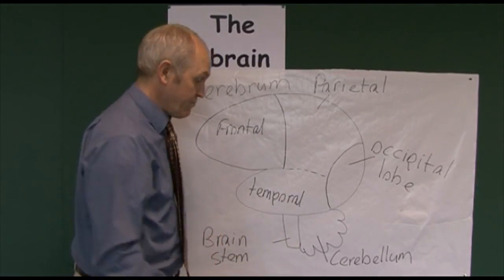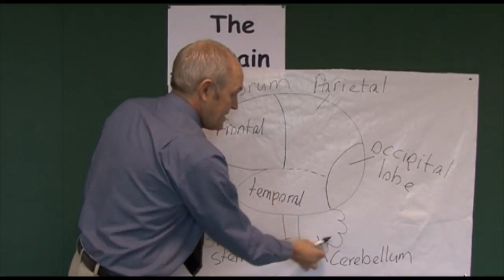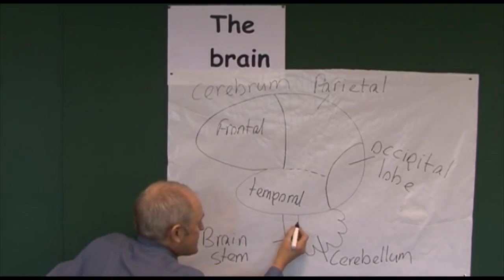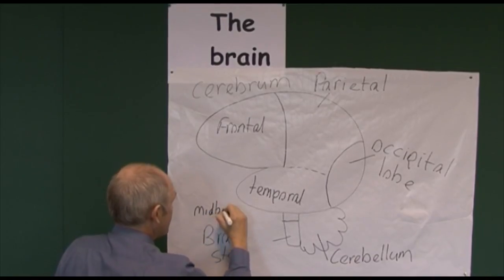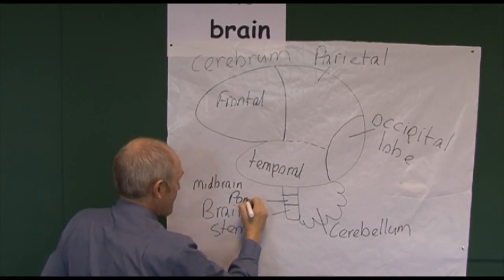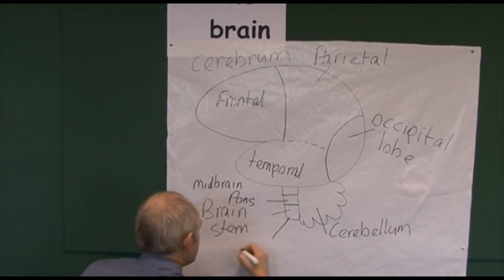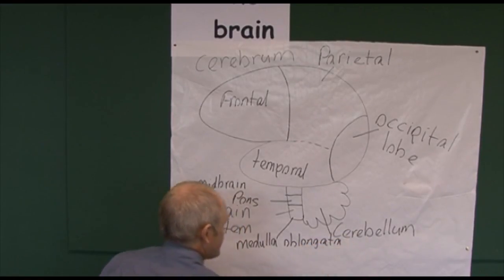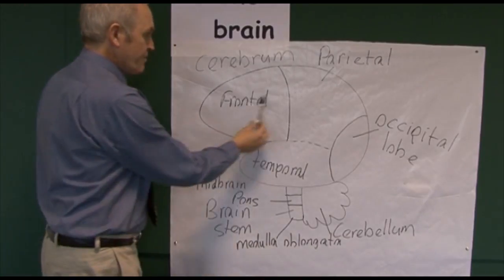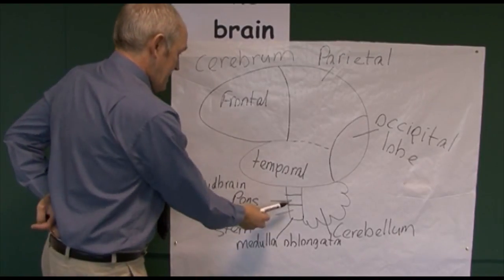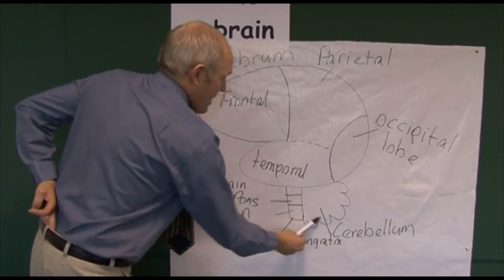The other two main components of the brain are the brain stem and the cerebellum. The brain stem is itself divided into three sections: the top part is the midbrain, the middle part is the pons, and the lower part is the medulla oblongata, often just called the medulla. So: frontal, parietal, occipital, temporal lobes; brain stem divided into midbrain, pons, and medulla oblongata; and then the cerebellum behind.